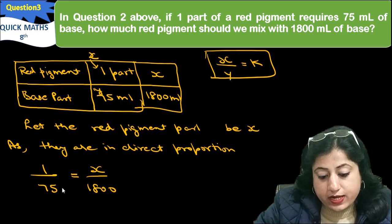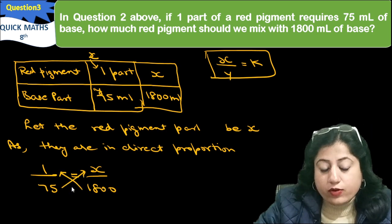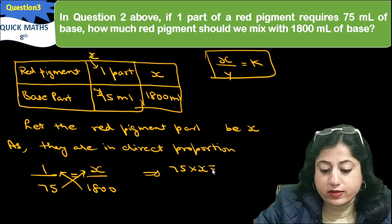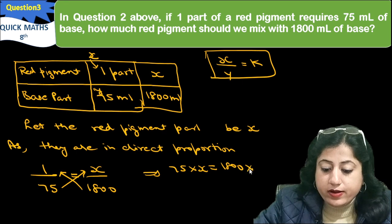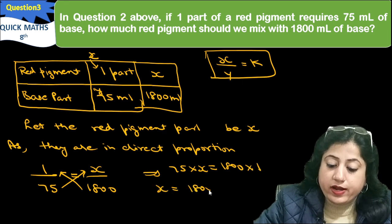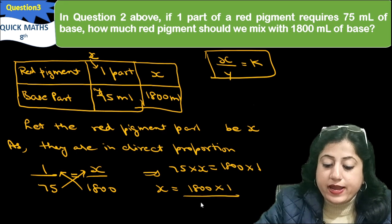In this ratio, constant. We will solve this. We will do cross multiplication. 75 into x equals to 1800 into 1. So we will have x equals to 1800 into 1 by 75.